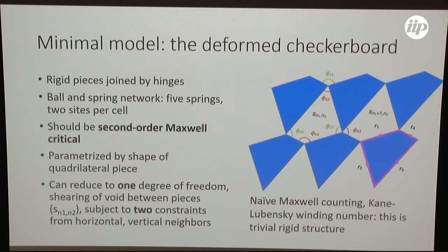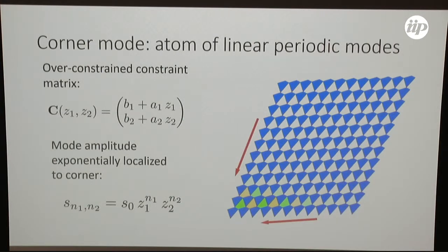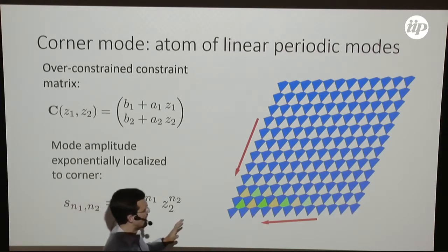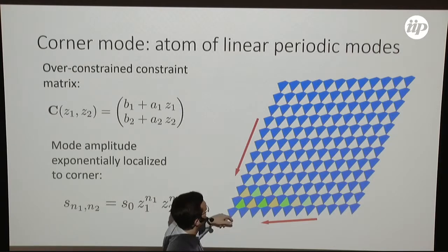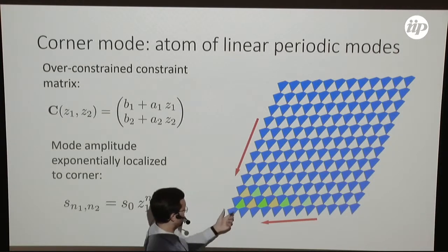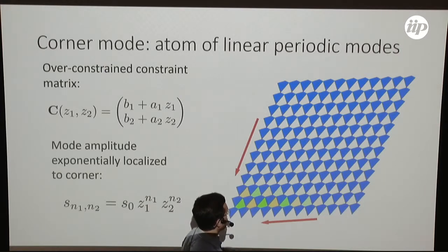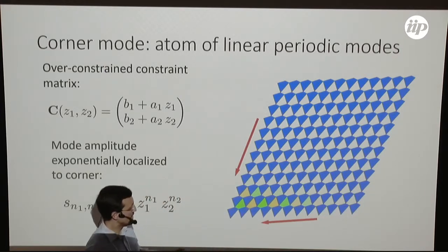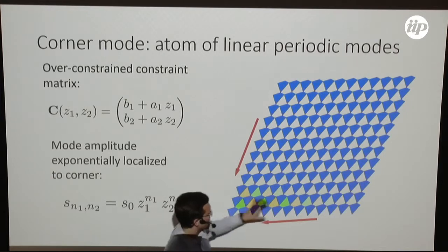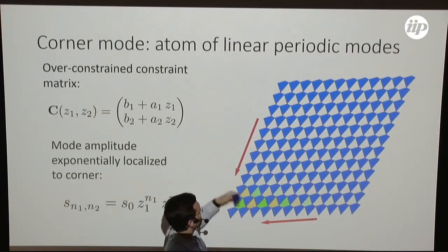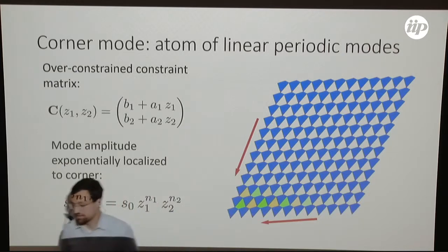But if we do something nonlinear, it turns out that we do indeed get a topological number. And what that topological number is telling us is the location of this corner mode. So this is a mode that is exponentially shrinking as I move to the right and as I move up. And the different colors just mean that the mode is changing sign as I move side by side. It's anti-ferromagnetic in that sense. The arrows here indicate that if I just cut off the bottom edge, it would be topologically polarized pointing in this direction. Left column, topologically polarized pointing in this direction.